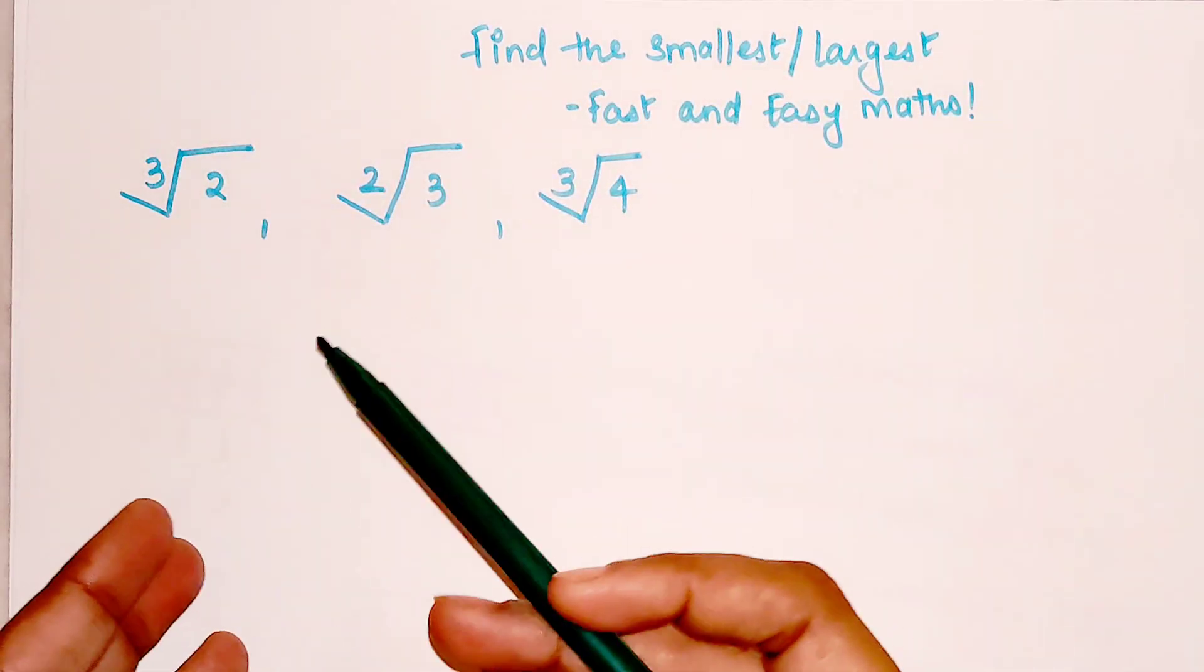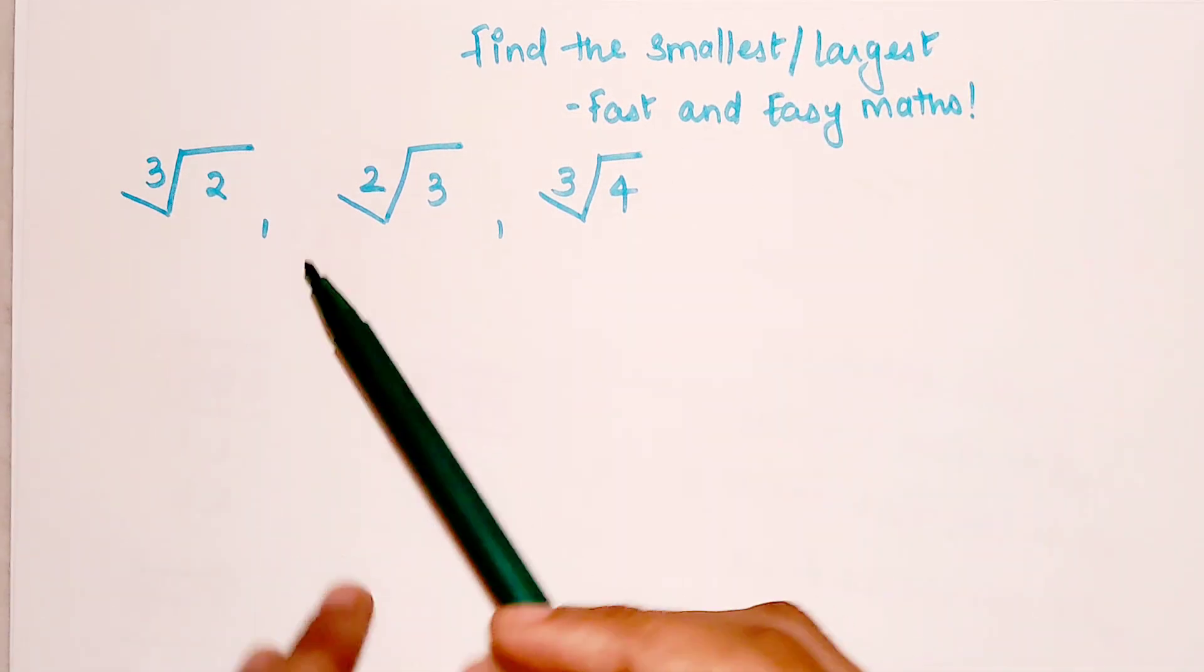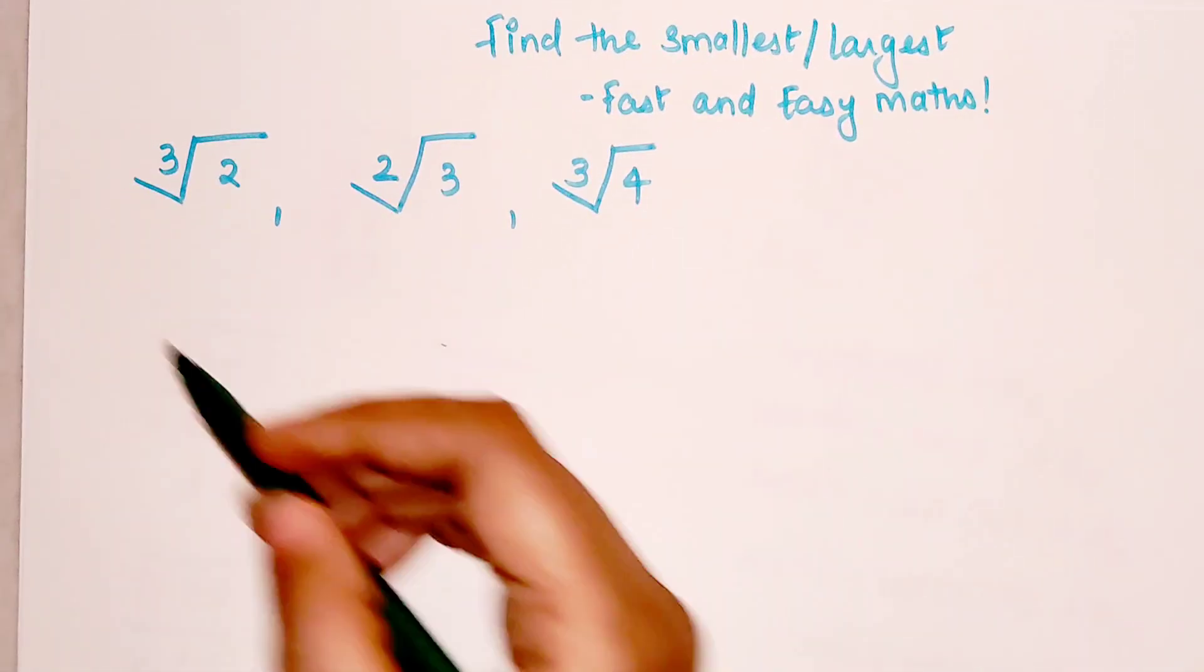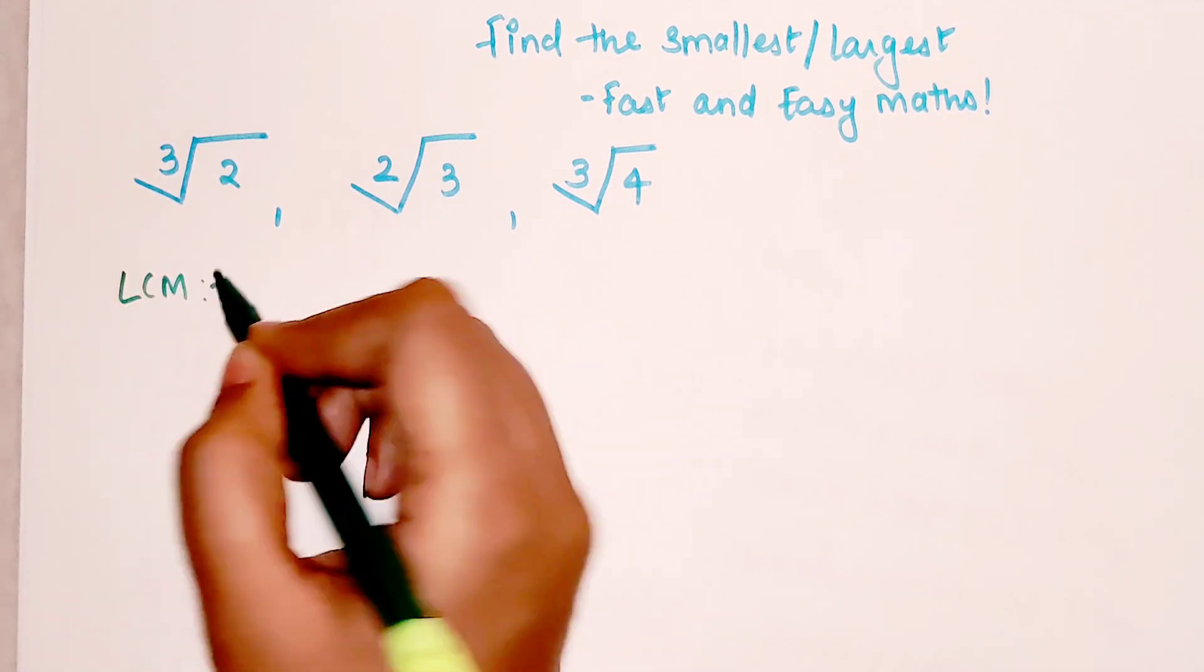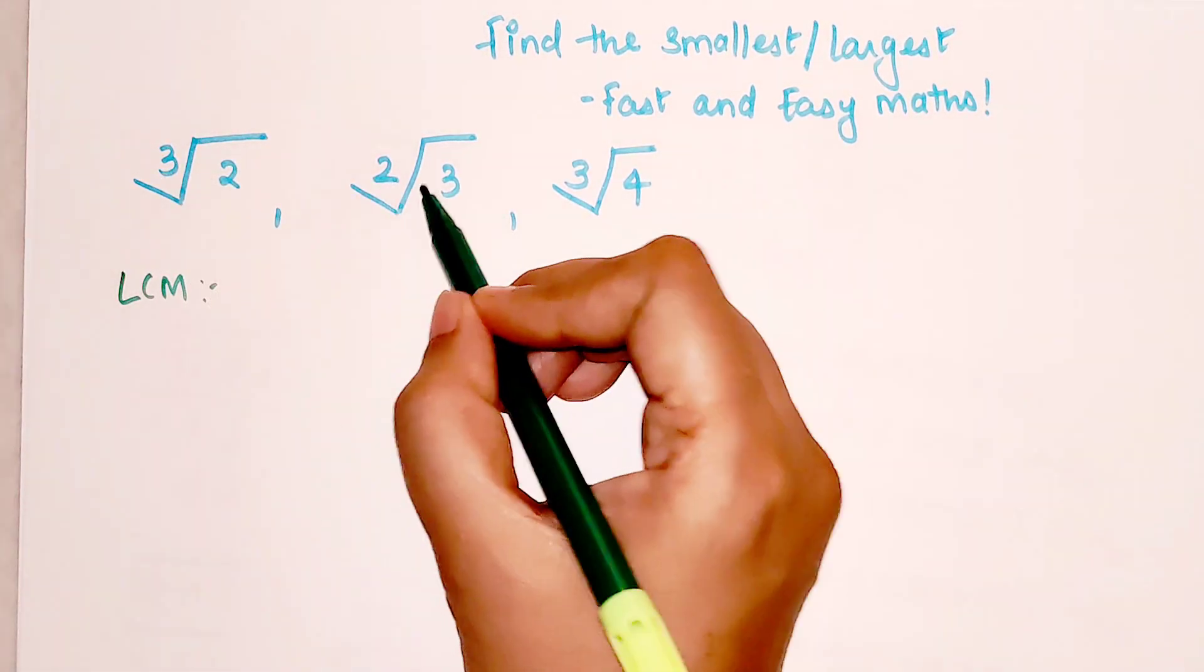Here the question is you have to either find the smallest or the largest amongst these three. So first thing is very simple: you take the LCM of the powers, which is 3, 2, and 3.